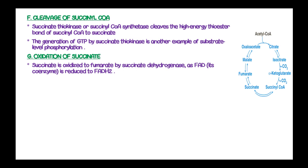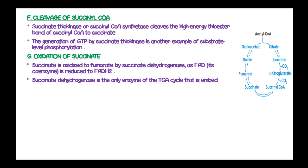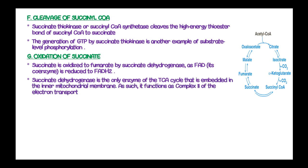Another step is oxidation of the formed succinate to fumarate, and this is catalyzed by the enzyme known as succinate dehydrogenase. Succinate dehydrogenase is the only enzyme of the TCA cycle that is embedded in the inner mitochondrial membrane. As such, its function is linked to complex two of the electron transport chain.